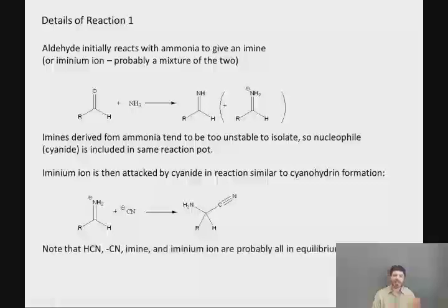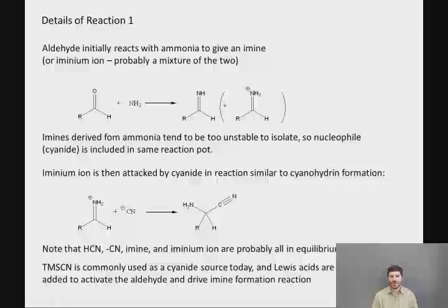So this second reaction of the iminium ion, that's going to be more reactive than the neutral imine, with cyanide is similar to cyanohydrin formation, which we also studied previously. That's simply the attack of cyanide on an aldehyde or a ketone. Note that at least under the slightly acidic pH that you would typically carry out these reactions, HCN, CN minus, the imine and the iminium ion are probably all present in some sort of complex equilibrium. And the key is, if you were to write a detailed mechanism, you would be able to access whichever intermediate you need in a particular step of the mechanism.